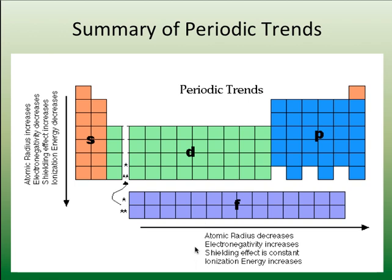To recap, the three main trends you should be able to list are: atomic radius, electronegativity, and ionization energy — what they do going across a period and down a group. Going down a group, it's the shielding effect. Going across a period, it's the increasing Z-effective — how effectively the nucleus and its positive charge can attract the outer electrons. That ends this screencast.